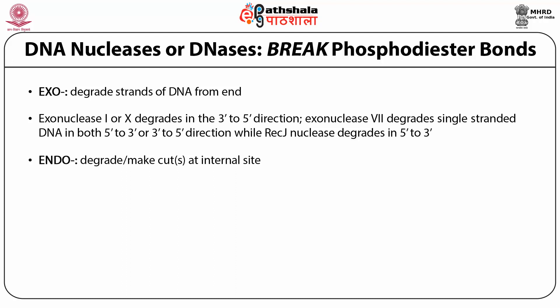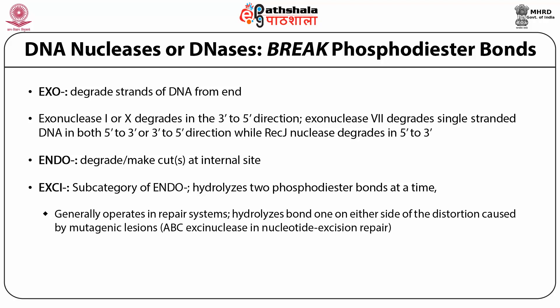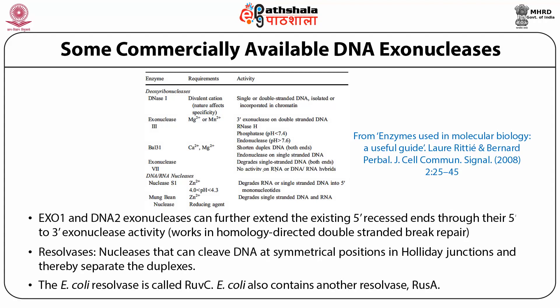Endonucleases make a cut at an internal site. Then there is another category referred to as Excinucleases — a category of endonucleases that hydrolyze two phosphodiester bonds at a time. They generally operate in repair systems, hydrolyzing bonds on either side of the distortion caused by mutagenic lesions. For example, ABC Excinuclease works in nucleotide excision repair. A few exonucleases and endonucleases are also known that degrade only single-stranded DNA.